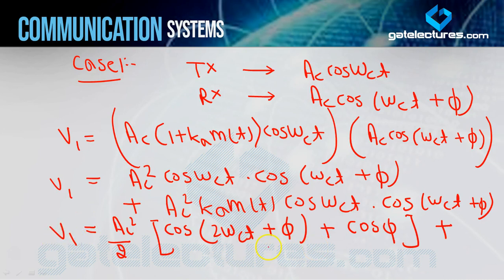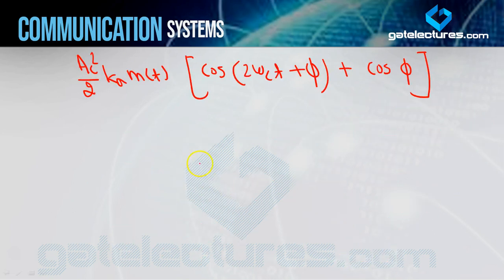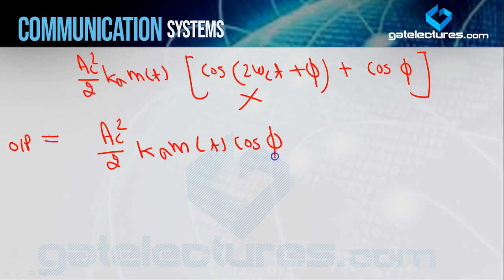After low pass filtering, the 2FC terms are rejected. cos(φ) is a constant value — for example if φ = 45°, cos45° = 1/√2 — so AC²/2·cos(φ) is a DC term that the amplifier will block. The final output is: AC²·KA·m(t)·cos(φ)/2. Here AC²/2 is constant, KA is constant, cos(φ) is constant, and we do get m(t) — so you might think the result is correct.